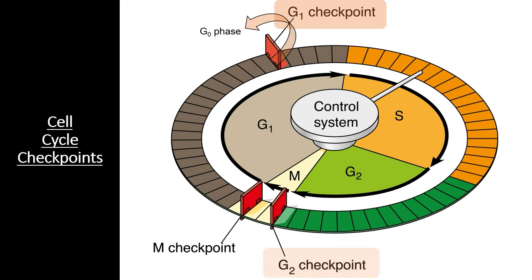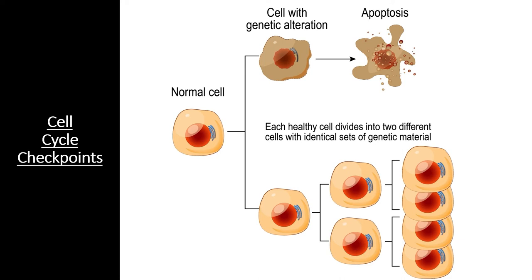The next checkpoint, the G2 checkpoint, comes near the end of the second growth phase. During this checkpoint, the cell ensures that DNA replication has been completed and that the DNA has not become damaged. If there is no DNA damage, the cell releases chemicals that start signal transduction pathways that lead into cell division. If there has been DNA damage, the cell will enter the process of apoptosis, also known as cell death, to ensure that the genetic alterations are not passed on.